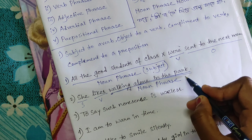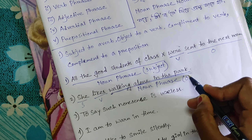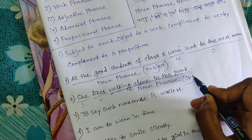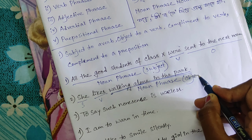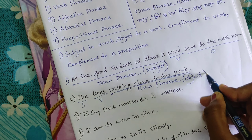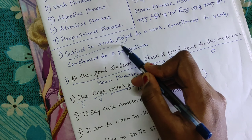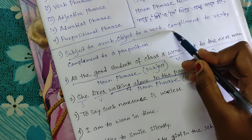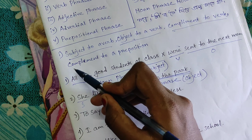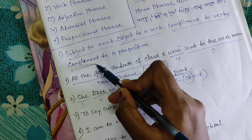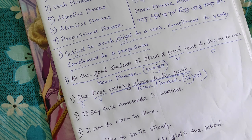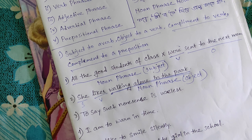In 'She likes walking alone in the park': 'she' is the subject, 'likes' is the verb, and 'walking alone in the park' is the object — a noun phrase acting as the object of the verb.